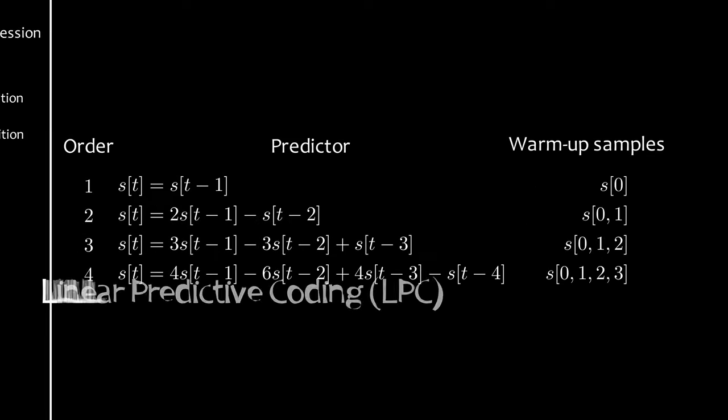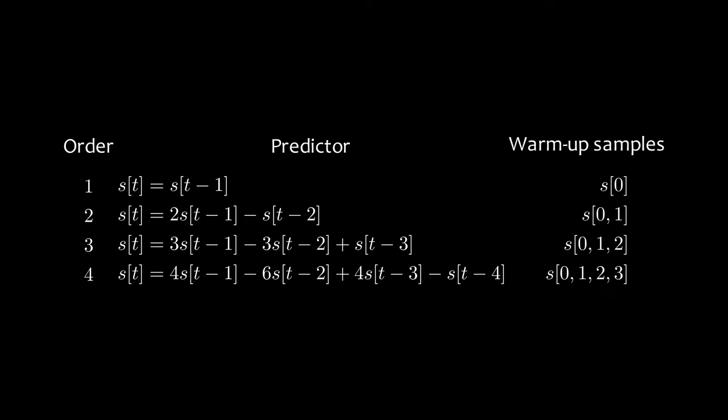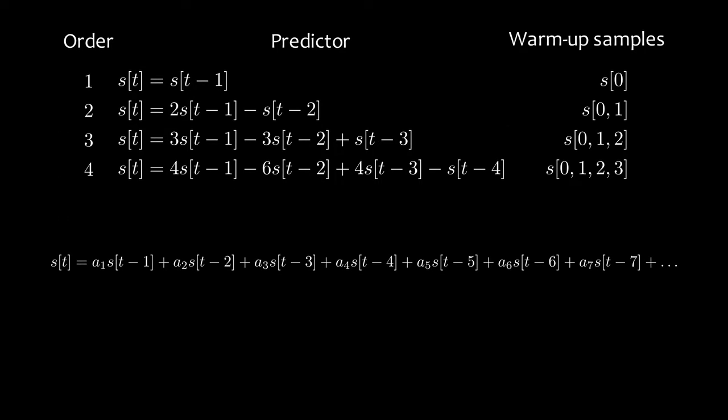Two remarks before we continue. First, it is important to remember that this whole polynomial prediction business only applies at the level of the few previous samples. We're not, in fact, trying to approximate all of the samples with just one polynomial. That is never a good idea. And second, in general, when we're talking about linear predictive coding, the coefficients here can be anything. The resulting function is then not a polynomial anymore, but it turns out that many of them are even better at signal prediction than the five simple ones we initially looked at.